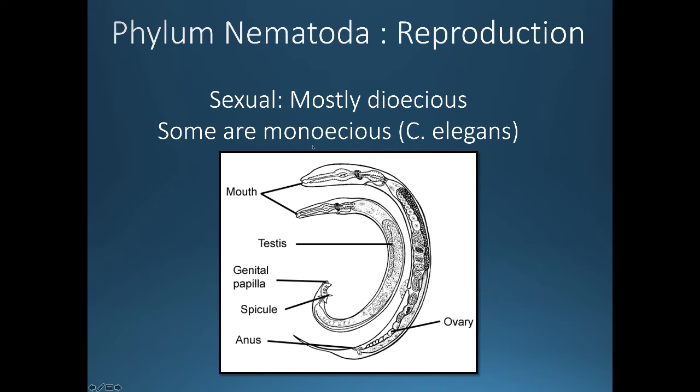Nematodes reproduce sexually, and most of them are dioecious, meaning members are either male or female, as shown in the picture. However, some are monoecious. C. elegans, a very common model organism that scientists study, is a hermaphrodite — it produces both eggs and sperm in the same worm.